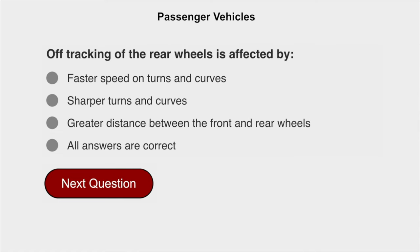Off-tracking — where the rear wheels track differently — is affected by all of the following: faster speed on turns and curves, sharper turns and curves, and greater distance between the front and rear wheels.